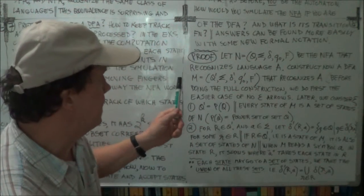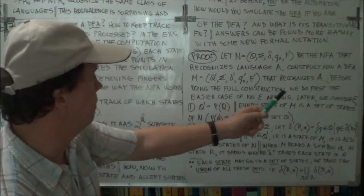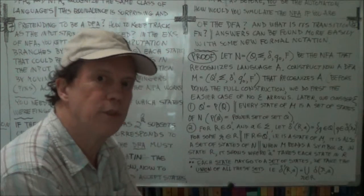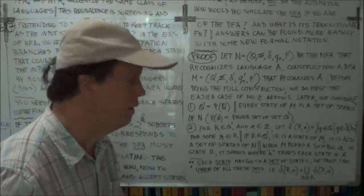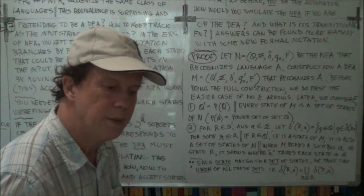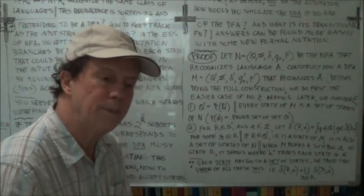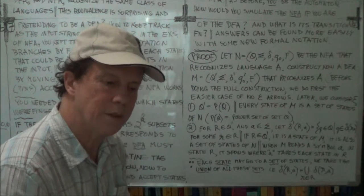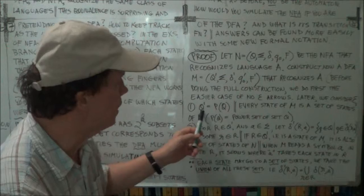So we'll start with Q'. From the discussion before, we suggested it would be a good idea to let the set of states of your DFA — Q' — be the power set. So Q' is just the power set. A state in the NFA would be a subset of your states in Q, so Q' is your power set.